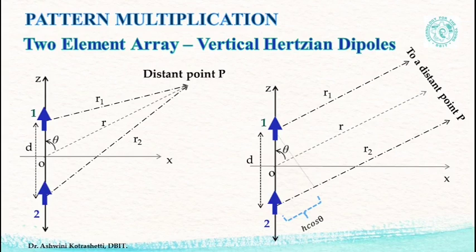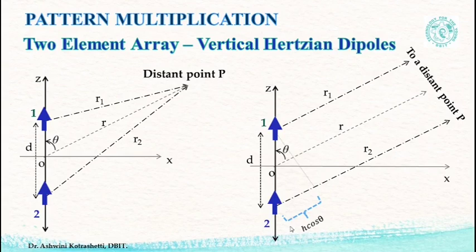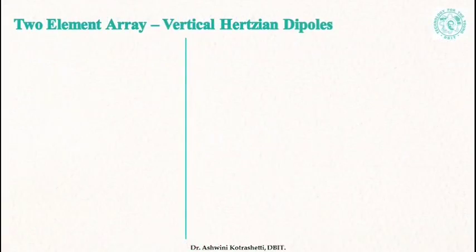The path difference between r1 and r2 is given by h cos(theta), and this path difference multiplied by phase constant beta or k gives us the phase difference. Let's look at the mathematical computation.